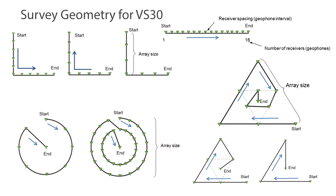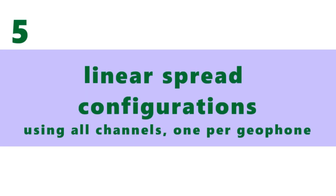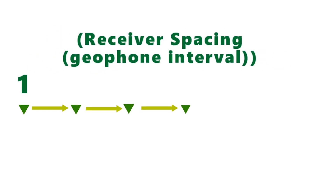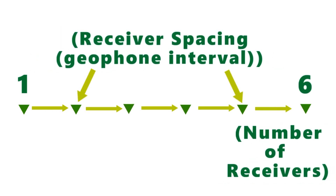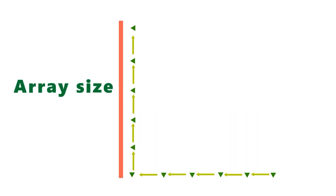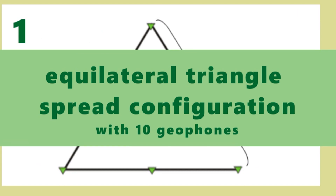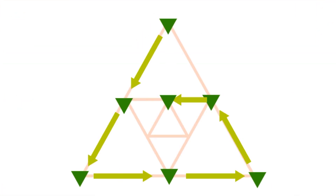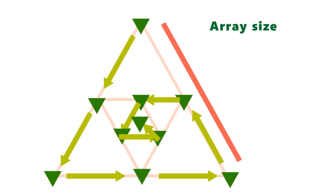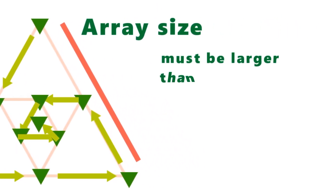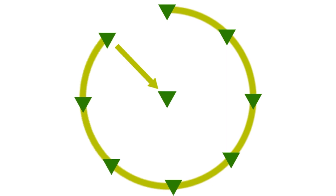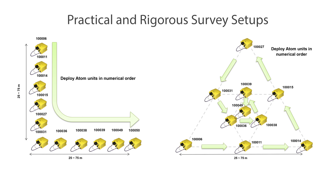Let's discuss survey geometry. There are many ways to set up a shear wave velocity survey: isotropic arrays such as triangles and circles, L-arrays, and linear arrays. Linear arrays are the easiest to set up but provide the least rigorous data analysis, being 20 to 30 percent lesser in data quality. L-shaped arrays are practical and rigorous. Triangular and circular arrays can be difficult to set up but provide the most rigorous data analysis. It is recommended to always perform the most rigorous array if possible — for field work, this typically means an L or triangular array.